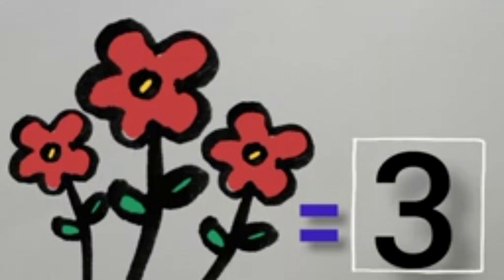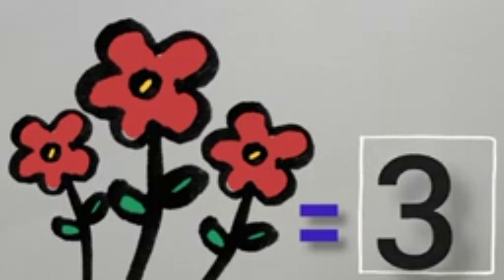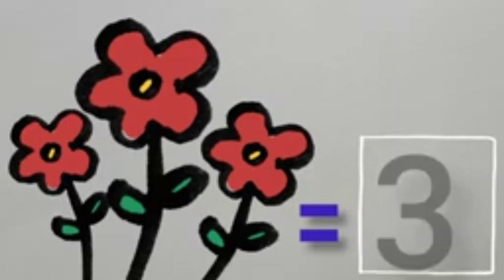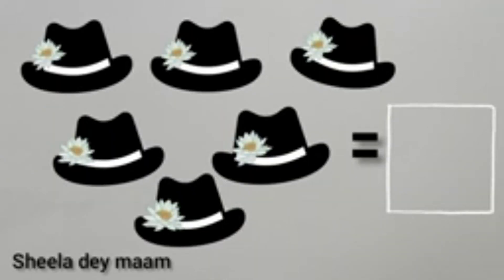3 flowers are here. How many flowers are here? 3. Tell me kids, how many hats are here? These are hats. Now we will count the hats with our fingers.